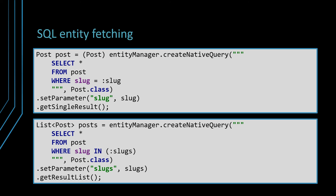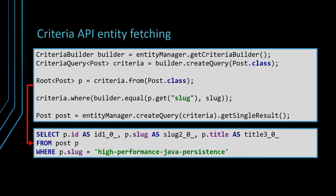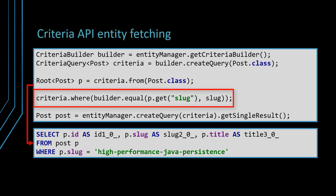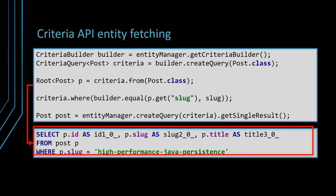Entities can also be fetched via native SQL queries. To execute an SQL query, we need to use the createNativeQuery method of the JPA EntityManager object, which can return either a single object or a list of objects. If you want to build an entity query dynamically, then you can use the JPA CriteriaBuilder. The Criteria query allows you to define the structure of the entity query programmatically. For instance, you can dynamically choose the from clause or the join relations, or vary the where clause predicates or the order by clause sorting criteria. This particular Criteria query generates the following SQL query.